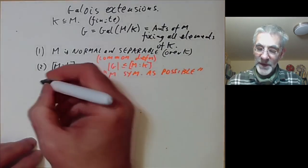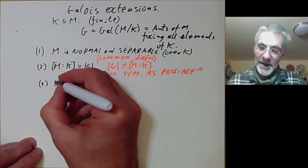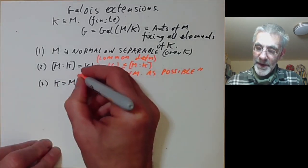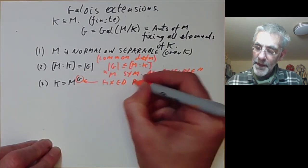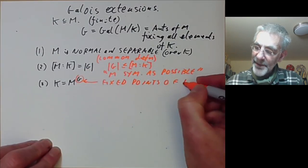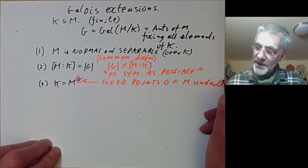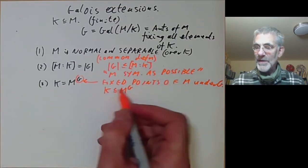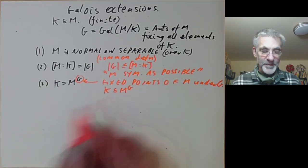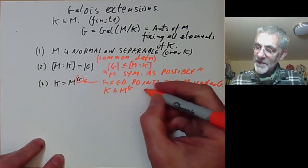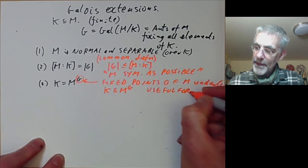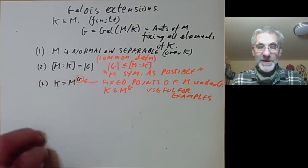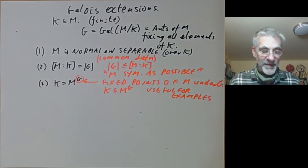The third equivalent condition says that K equals M^G — the fixed points of M under the action of the group G. K is certainly contained in M^G because G is defined to fix K. This condition is very useful for examples; we'll see how to use it to construct Galois extensions with any given finite group.